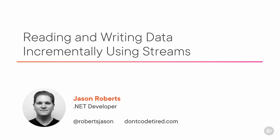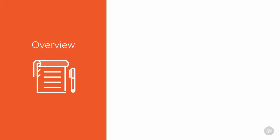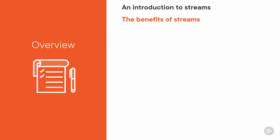In this module we're going to learn how we can instead read and write data incrementally using streams. This means that we don't have to load the entire file into memory to be able to process it. We'll kick off this module by getting a high-level introduction to what streams are and how they work, and we'll also look at some of the potential benefits of using streams over loading the entire file into memory.